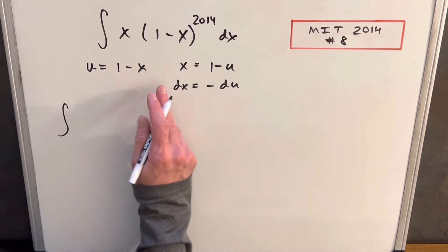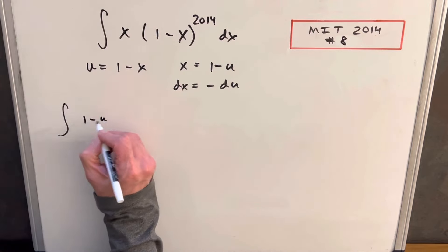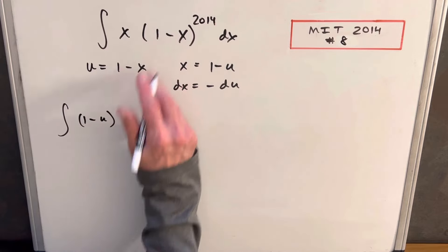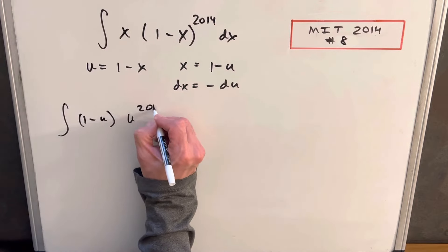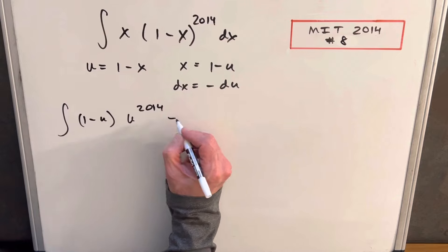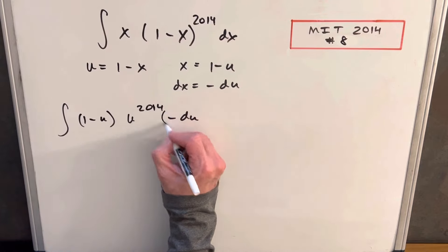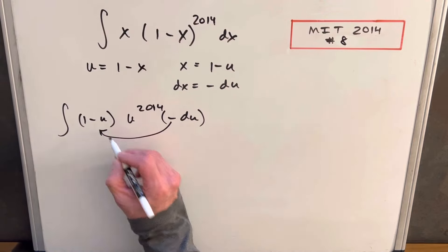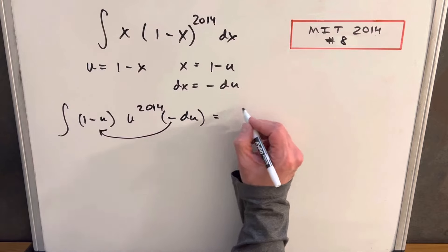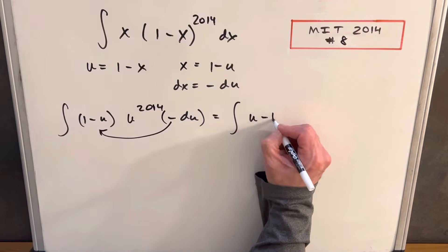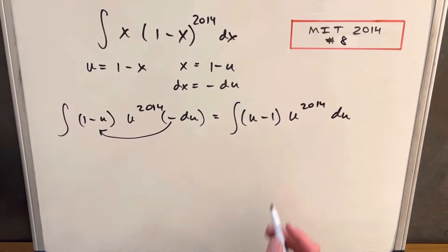So then we can make this substitution for our x is going to be 1 minus u, and here we're going to have a u to the 2014, and we'll have minus du. And what I'll do, I'm just going to distribute this minus over here and just rearrange that. So instead of having 1 minus u, we're going to have u minus 1. And now we can just multiply this together and see what happens.